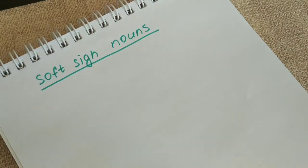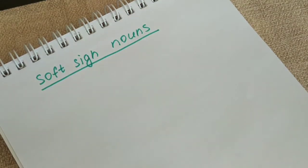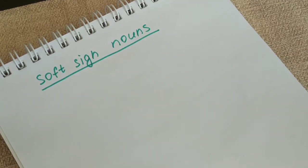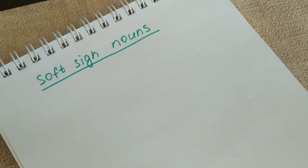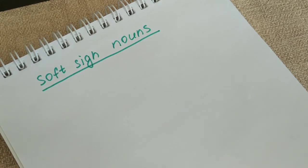Hi, Russian learners! Oksana here. Welcome to my channel. Today we continue with our Russian studies, and the theme of today's video is going to be the gender of the soft sign nouns — that is, how we distinguish the gender of the nouns ending in the soft sign, or in Russian, мягкий знак.